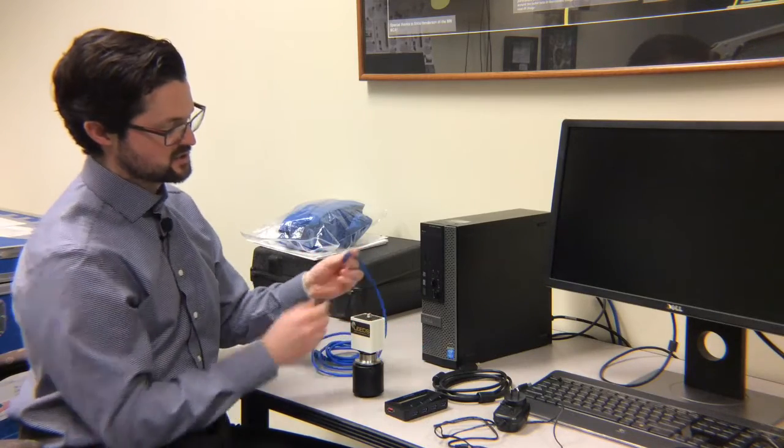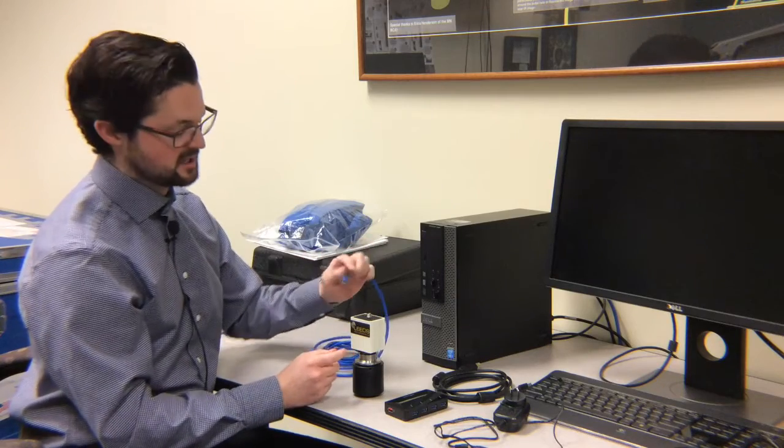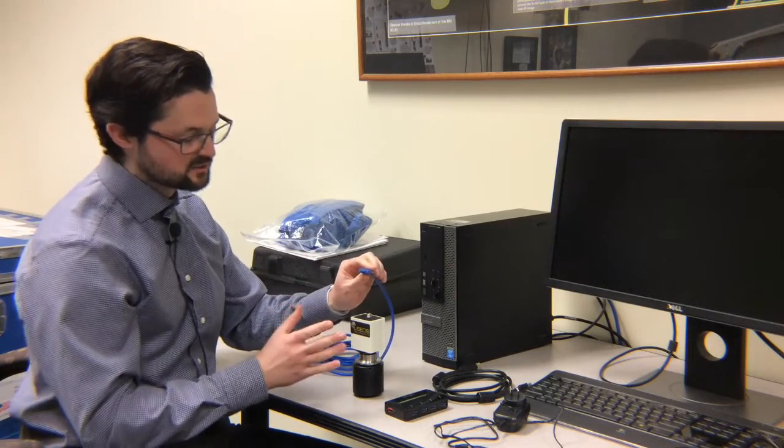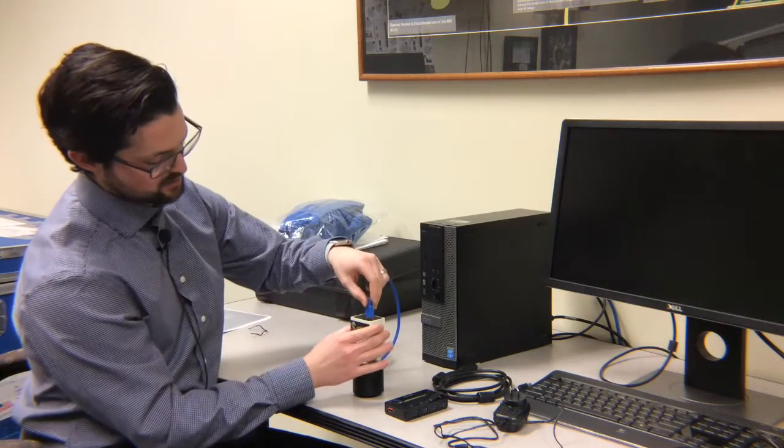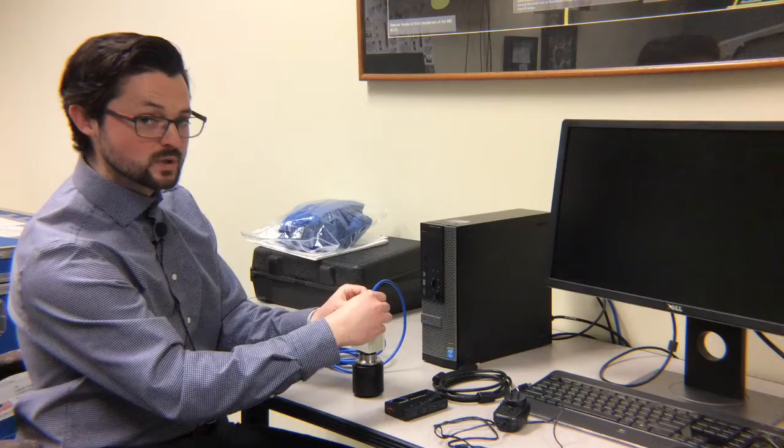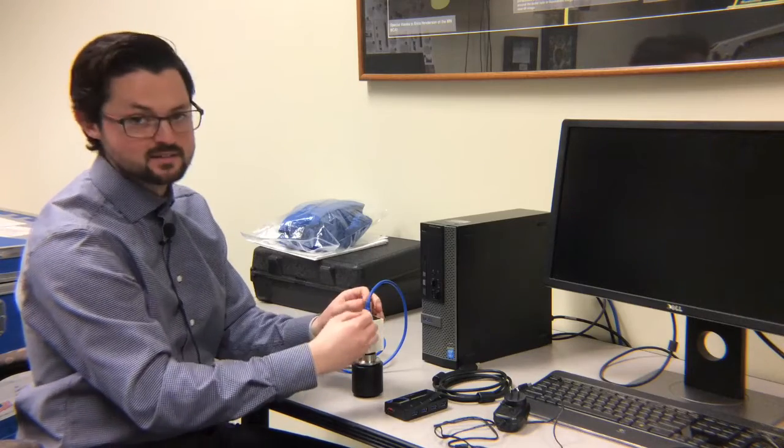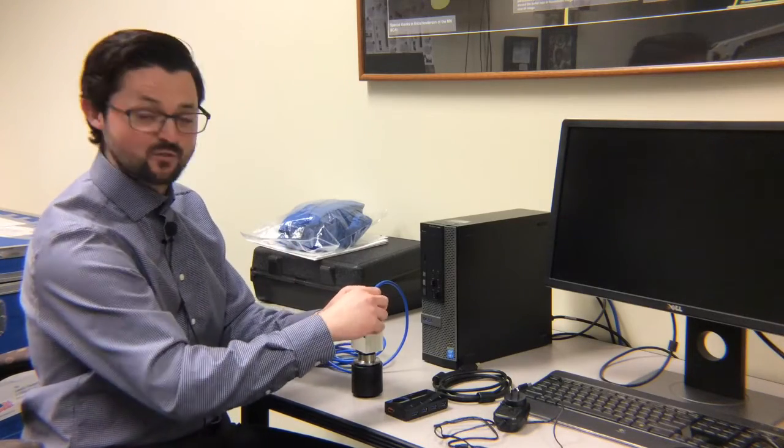Next thing to do is attach the USB cable to the camera. You'll notice it's got a different looking USB attachment cable with two thumb screws on the side. So you just plug it in, and it can only plug in one way. So if it's not going in, flip it. Don't force it.